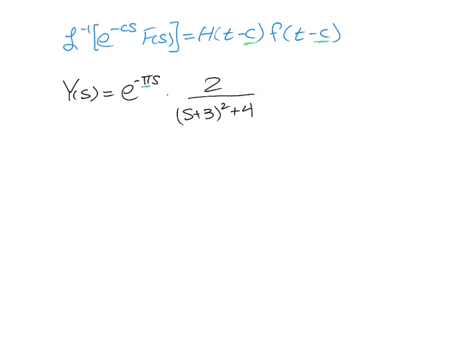So let's go ahead now and actually take the inverse. So that inverse is little y of t. And again, we're always going to have our Heaviside, H(t minus π).